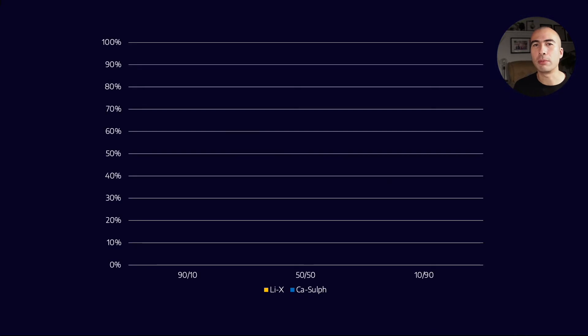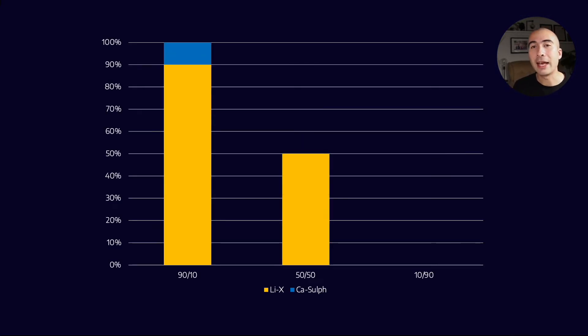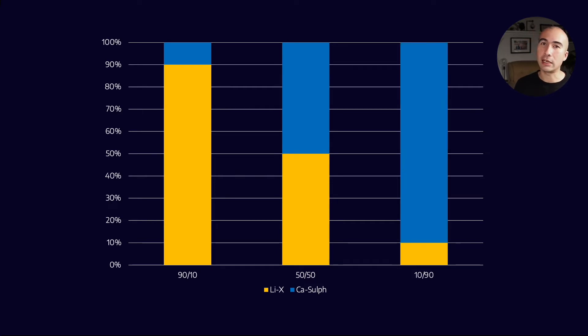Now, helpfully, the ASTM has a kind of outline for how we should do this testing. So ASTM D6185 helps give guidelines on testing grease compatibility. And generally, what they say is that you want to mix the two greases in two different proportions. So you might do 90-10, and then 50-50, and then 10-90.